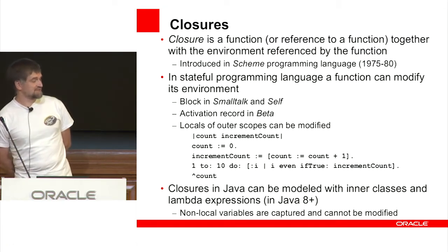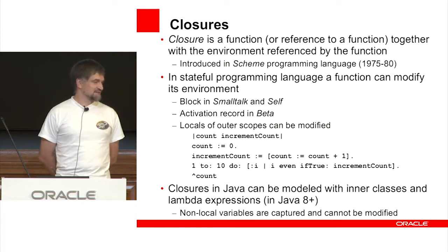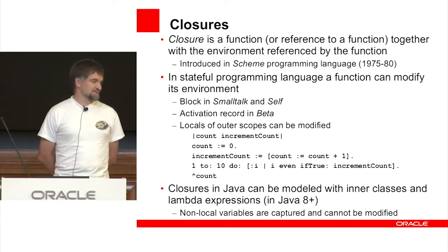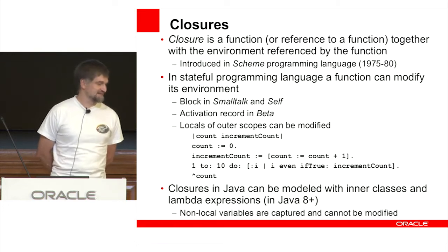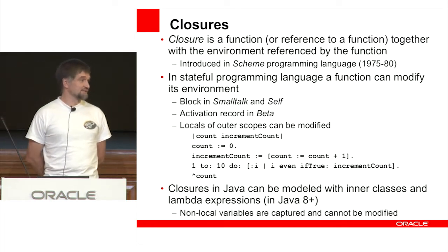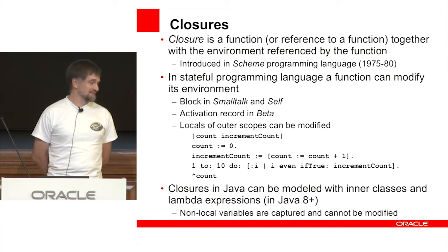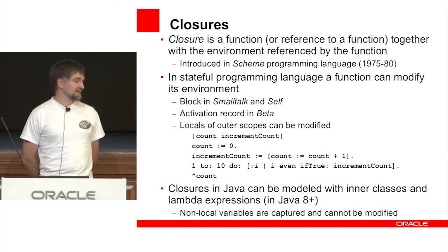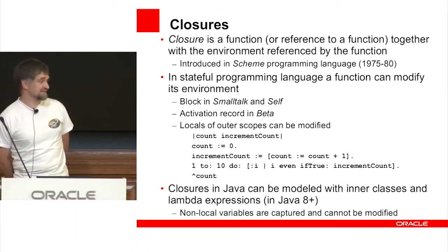In some programming languages a function can modify its environment. You can find this in blocks in Smalltalk and activation records in programming language Beta. Locals of outer scopes in such languages can be modified. In Java, however, closures can be modeled with inner classes and lambda expressions in Java 8 and later, but non-local variables are captured and cannot be modified — that's the difference from blocks.